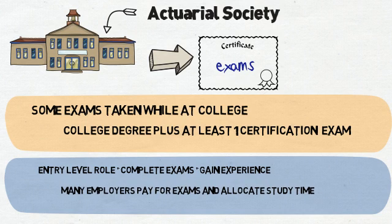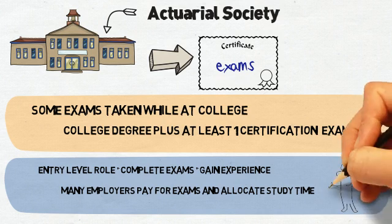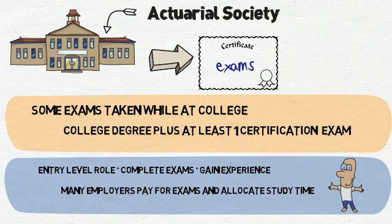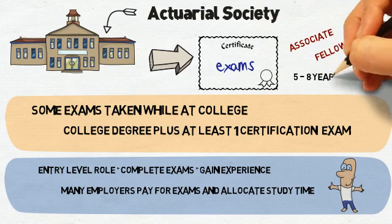Many employers help by paying the examination fees and providing study time. Passing these exams will help you become an associate or fellow of the Actuarial Society. This can normally take between 5 to 8 years.